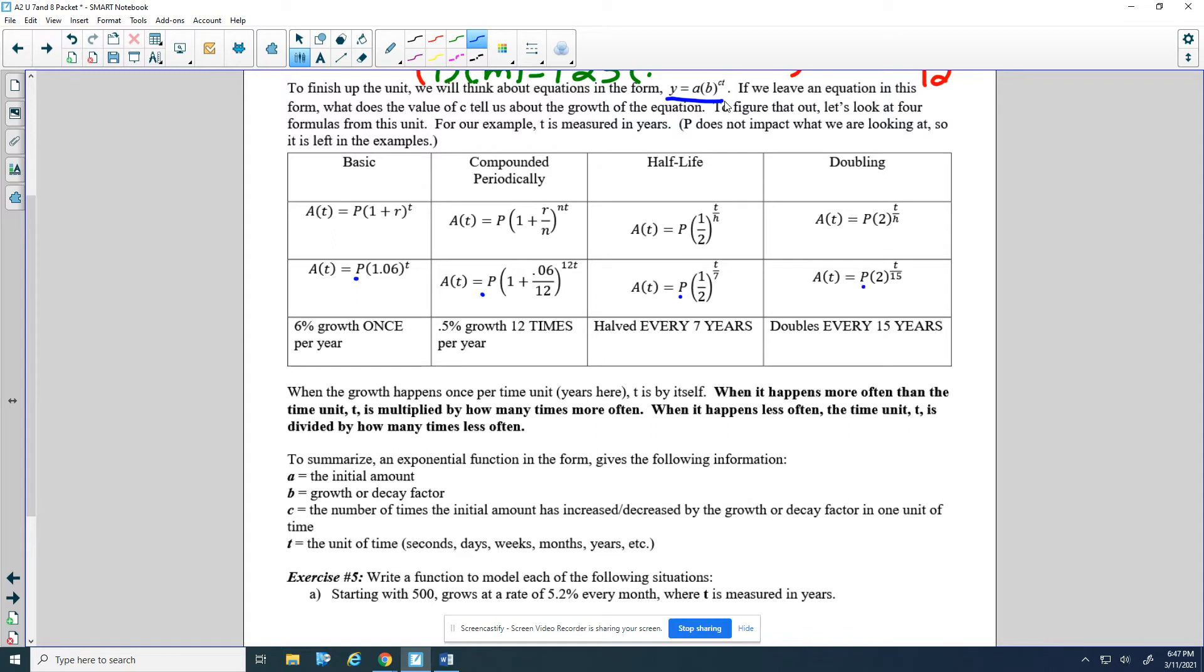Looking through these, this one means 6% growth once per year. A basic formula, one time per time unit, once per year.